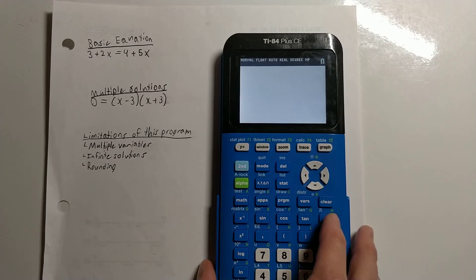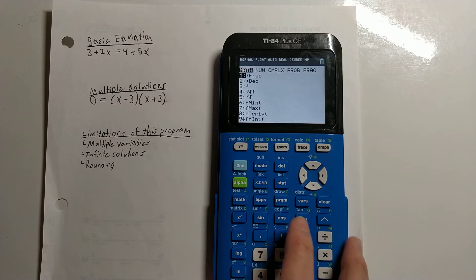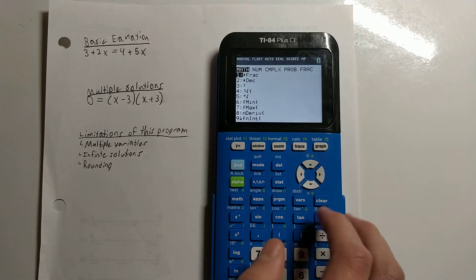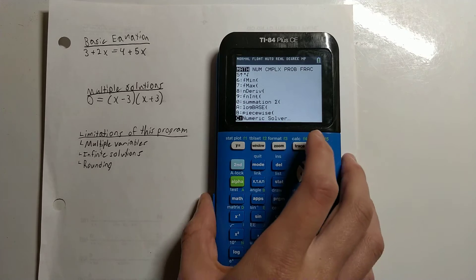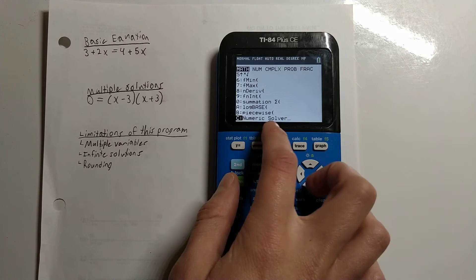To open the equation solver, press the Math button. The last option in the menu is the equation solver, so we can quickly get there by pressing the up arrow key and then pressing Enter to select the numeric solver.